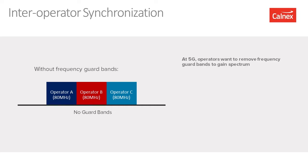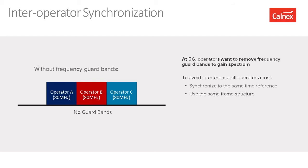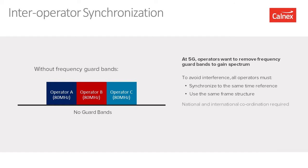As a result of removing guard bands, we need to manage interference between networks. To avoid that interference, operators must synchronize to the same reference — for example, the national time reference in their country — and importantly should use the same frame structure in terms of downlink and uplink time slot allocation. This topic is covered by a GSMA publication from April 2020, which refers to coexistence of multiple TDD networks and the need for coordination within a country or across international borders.